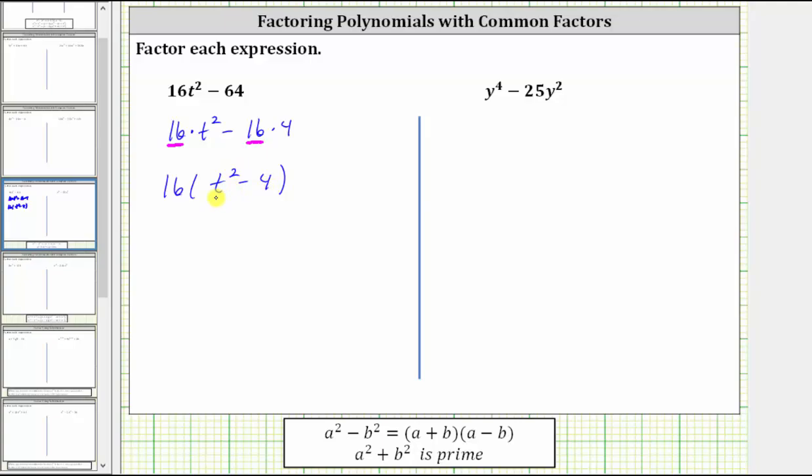We factor this as a difference of squares, which means it will factor into two binomial factors. Because t times t is t squared, we have a t here and a t here. And because two times two is four, one binomial factor is t plus two. The other binomial factor is t minus two. This is the correct factored form of the given expression.